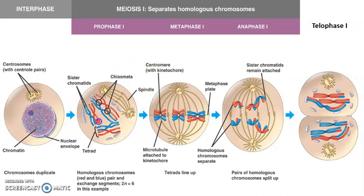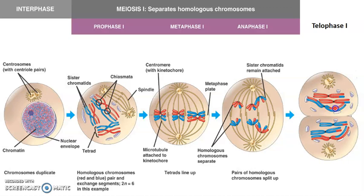The original cell we had started with had a total of six chromosomes. You can see here in prophase I that we had one, two, three homologous pairs or tetrads that had undergone synapsis and crossing over. And by the time we get to telophase I and eventually cytokinesis, we have two cells that now have three single chromosomes in them as opposed to six. However, they still exist in the sister chromatid pair form.